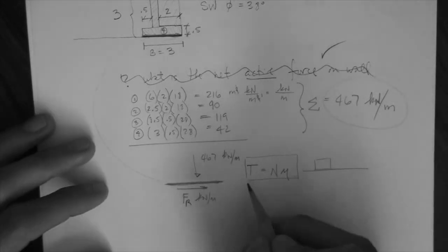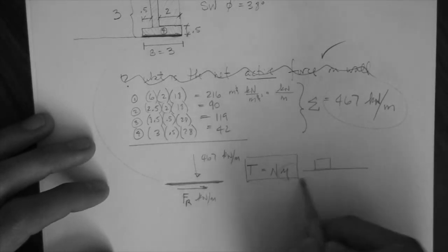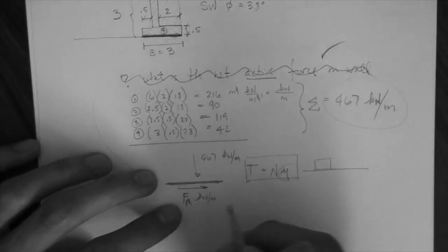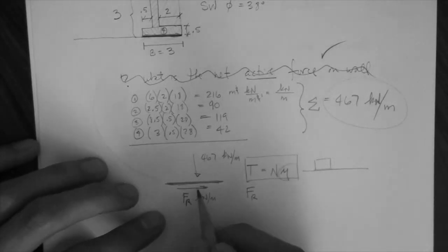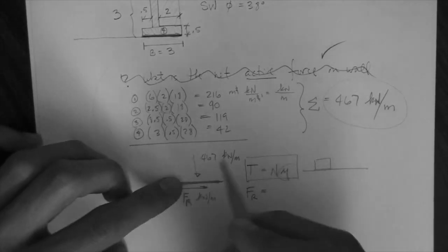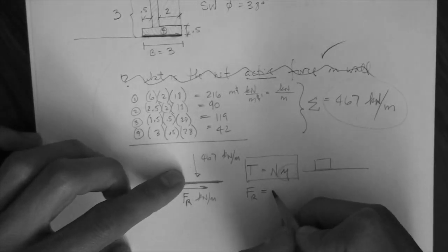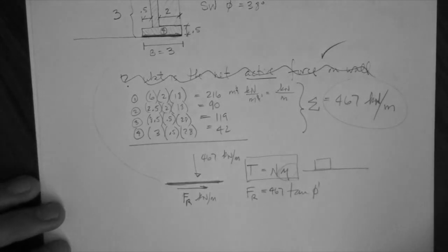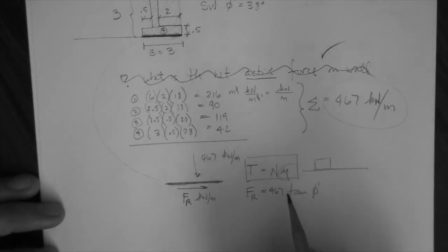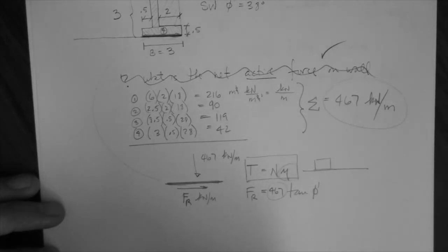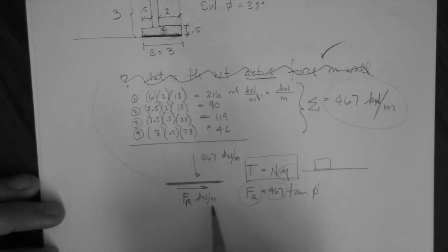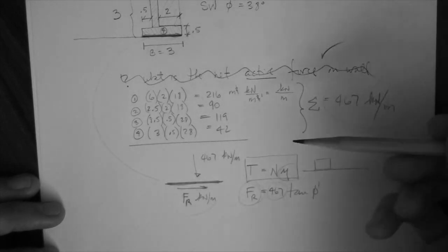This is for a block on a plate. For soil, we like to use tangent phi instead of this thing, right? So this translates to what? Fr, the resistance, is the normal force tangent phi. Okay, so notice that this is in units of kilo newton per meter. Therefore, this has no units. So this has to be in kilo newton per meter, which is what we want. So we can compare that to the net active force.